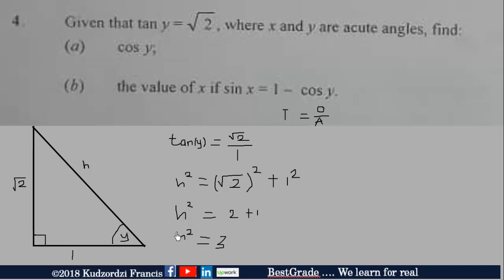Now simplify this to get h² equals 3. So we can take a positive square root of both sides to obtain h equals √3. So we have this length, which is the hypotenuse, to be equal to √3 units.